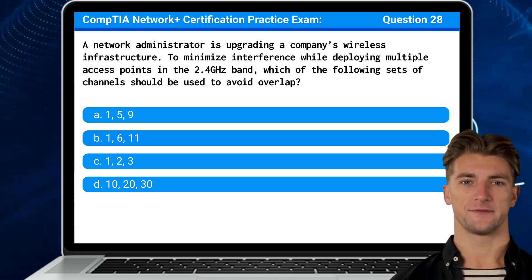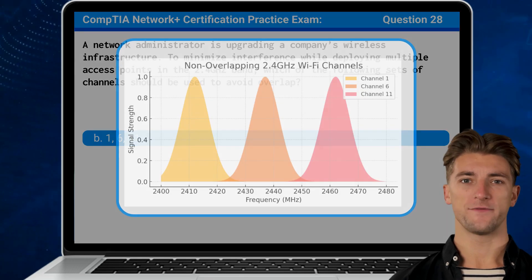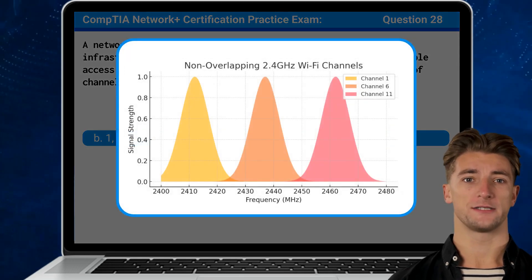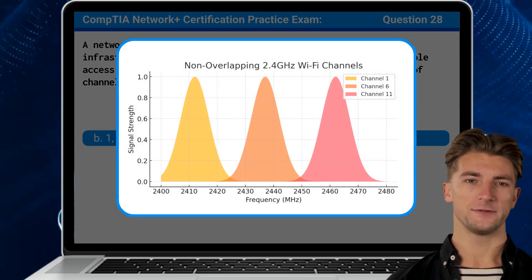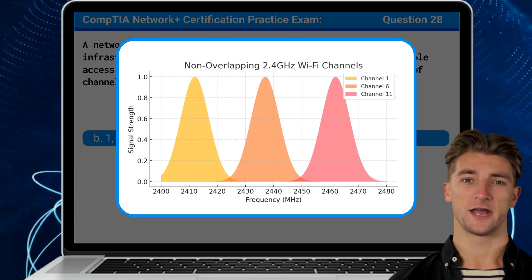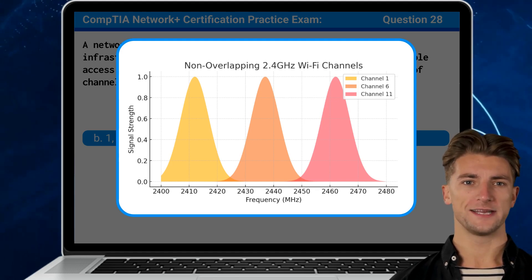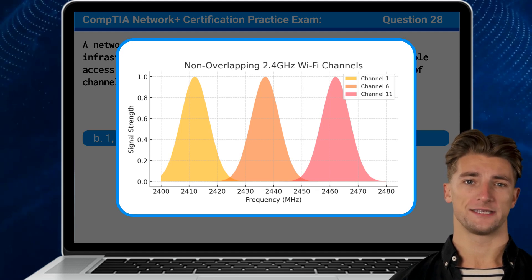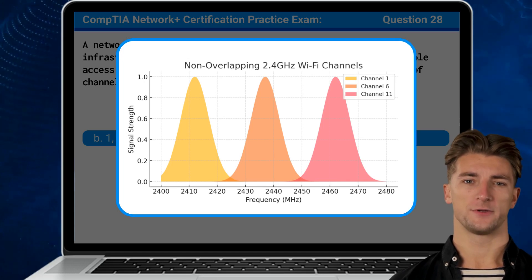The answer is B: 1, 6, and 11. In the 2.4 GHz wireless spectrum, channels overlap due to their frequency width, which can cause interference between nearby access points. The only three non-overlapping channels in the standard 20 MHz channel width are 1, 6, and 11. Using these non-overlapping channels ensures that adjacent access points do not interfere with each other, leading to a more stable and efficient wireless network.